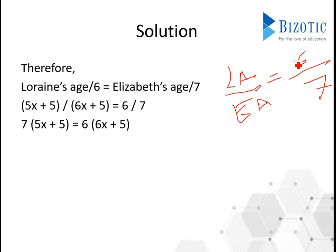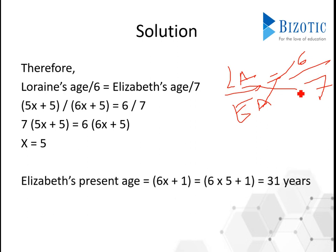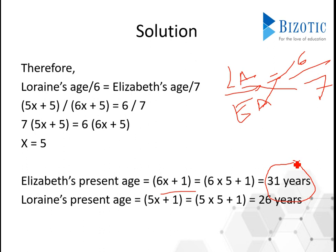With x equal to 5, we can now easily calculate Elizabeth's age. Elizabeth's age is 6x plus 1, and x is 5, so 6 times 5 is 30, plus 1 is 31 years. You can also calculate Lauren's age which is 26 years. According to the problem, our answer is option C, 31 years is the age of Elizabeth.